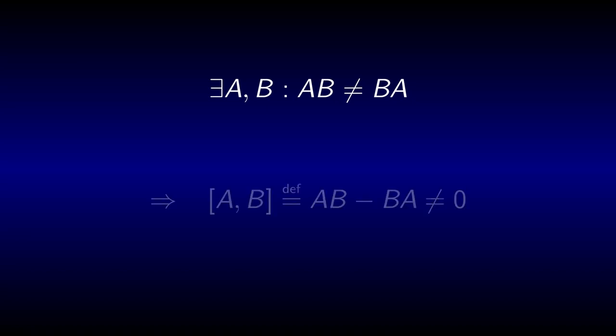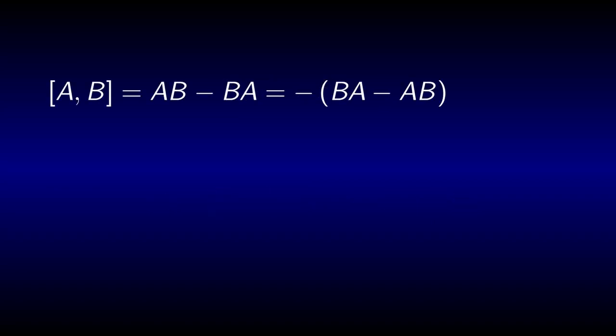This can be done using the commutator, which is usually written using square brackets and is defined as the difference of the two ways to multiply the two objects. Two operators commute if and only if this object vanishes. Note that switching the arguments of the commutator just introduces a minus sign.